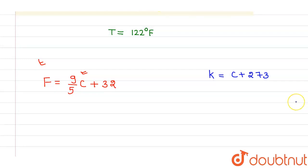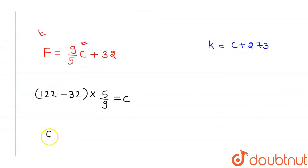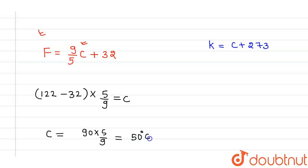Now if I put the value of F as 122, I will get the value of C as 122 minus 32, into 5 by 9. This comes out to be C equals 90 into 5 by 9, which equals 50 degrees Celsius. So the temperature is 50 degrees Celsius.